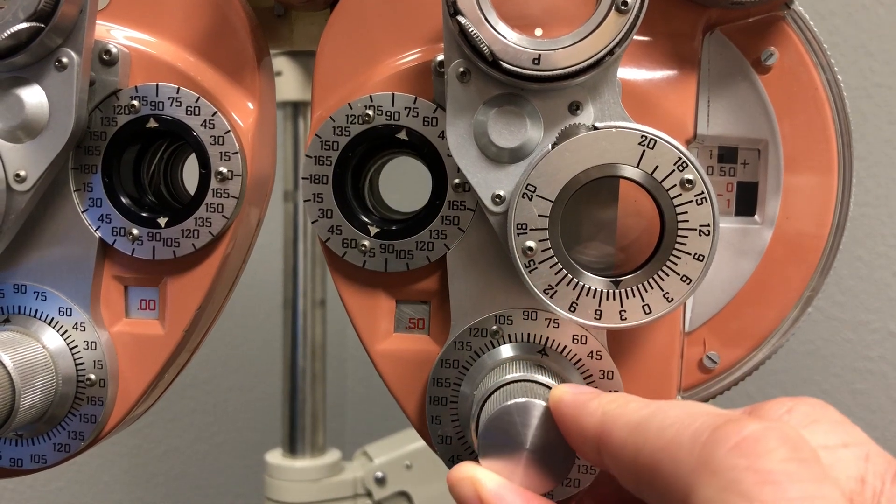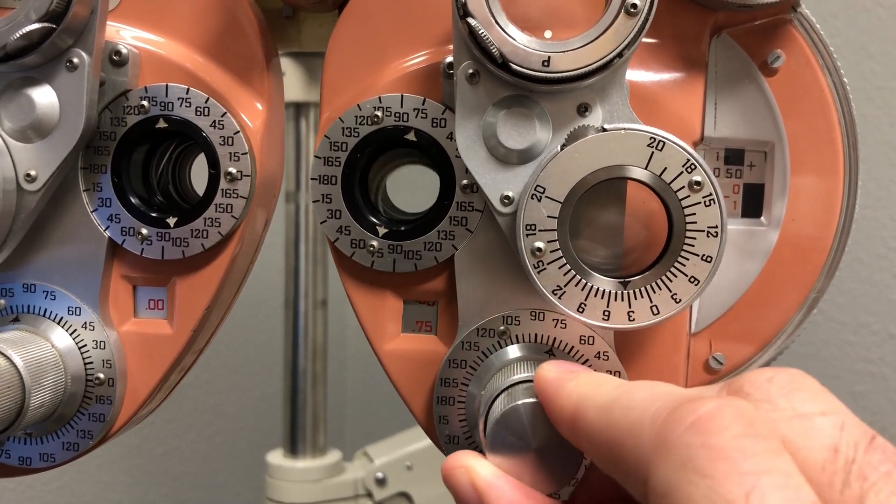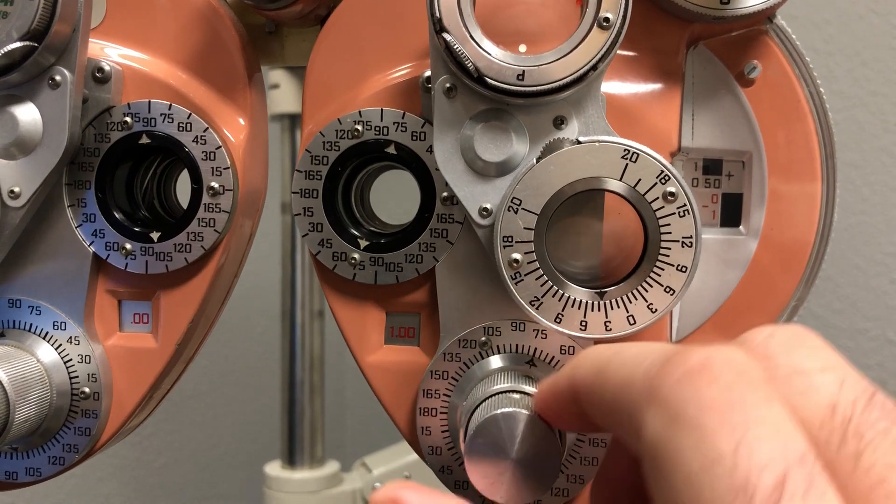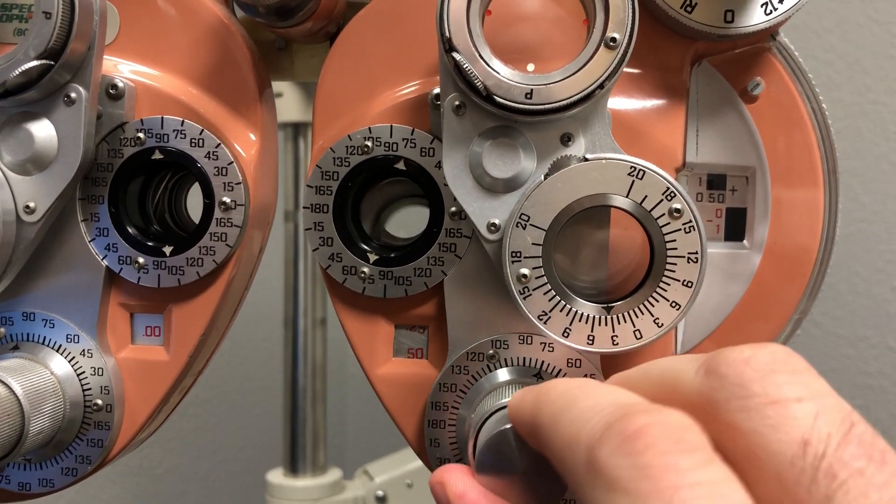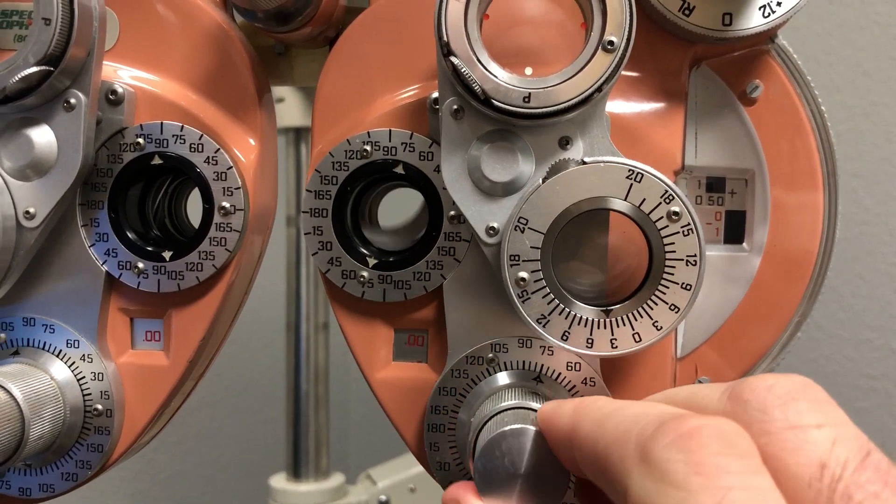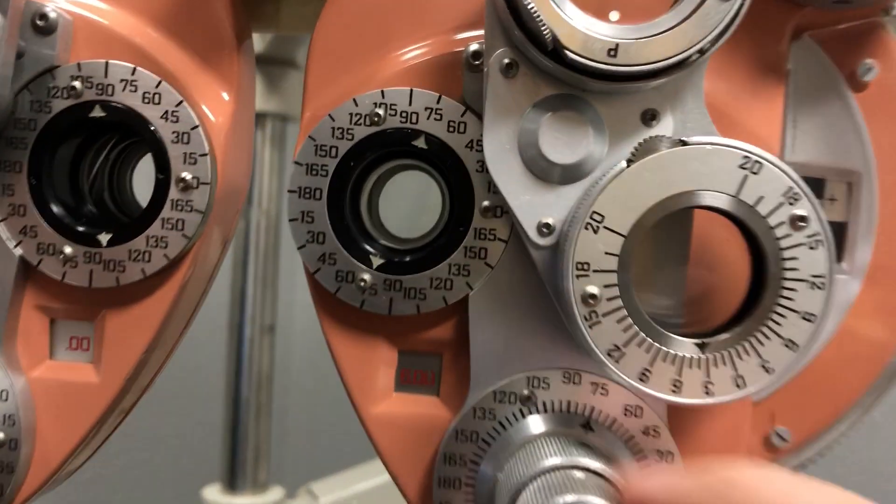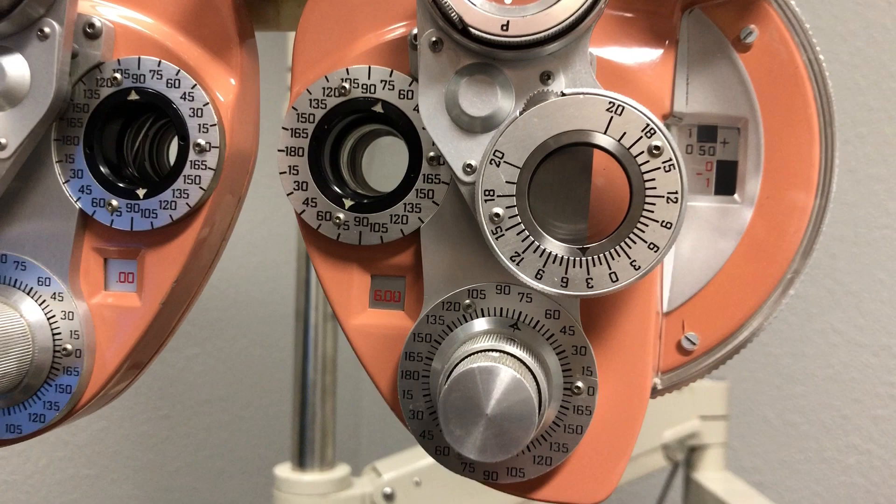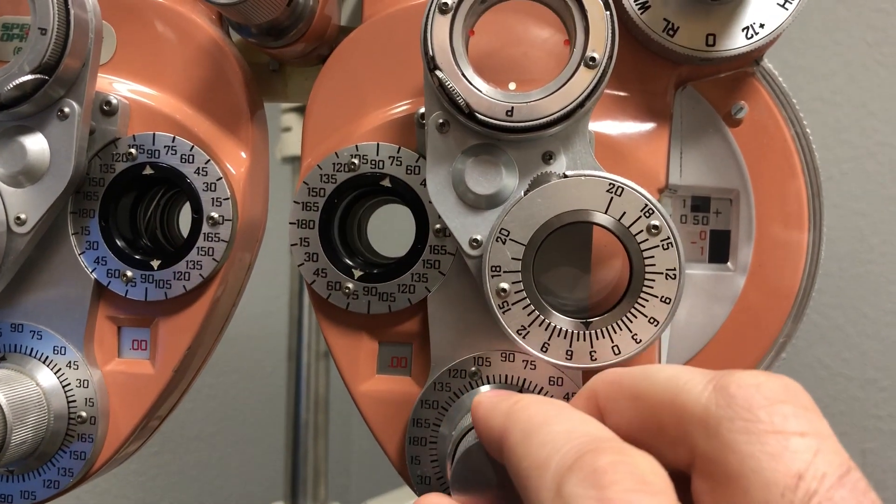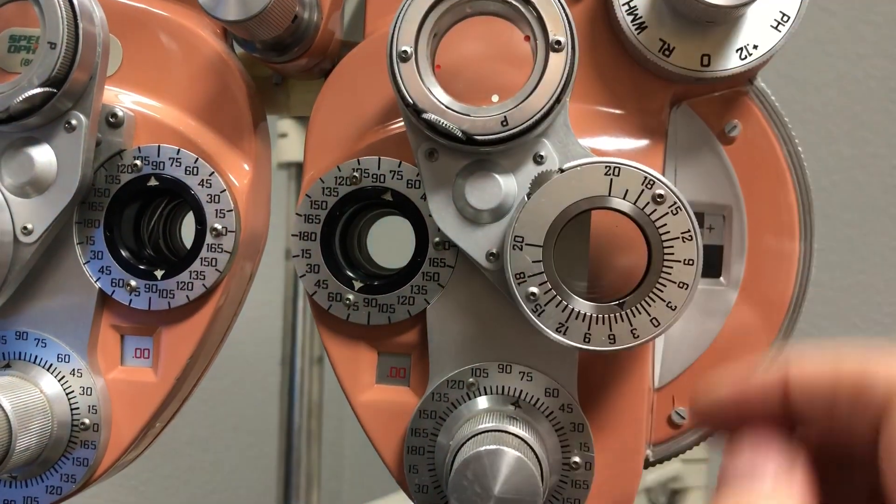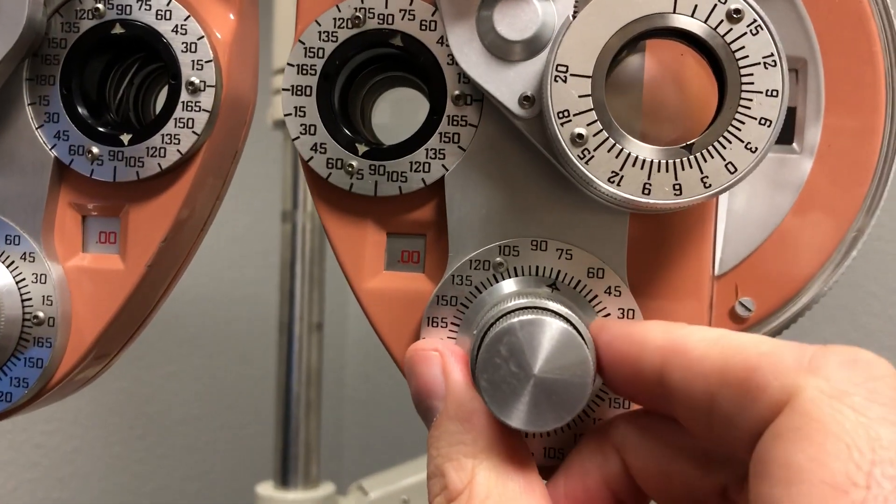It goes up to about six diopters, which is a really high cylinder power. If we want to change the axis, you're going to see this knob here change.